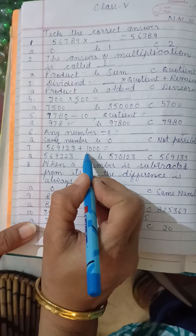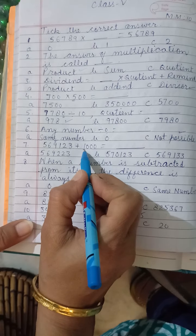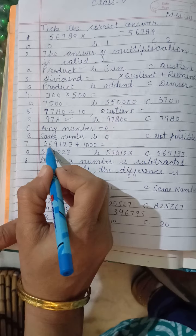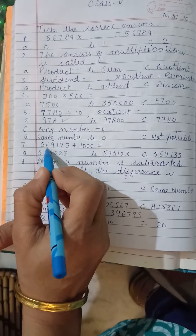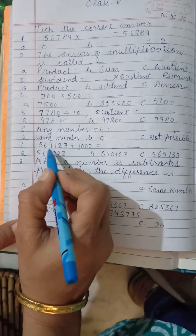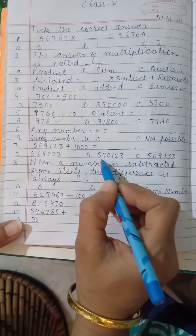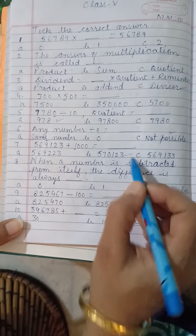And in 1000 place digit, you will add 1. Then 9 plus 1, 10. Then 1 carry. Carry will be forward on this 6. Then it will become 7. 5, 7, 0, 1, 2, 3. This is the correct answer.